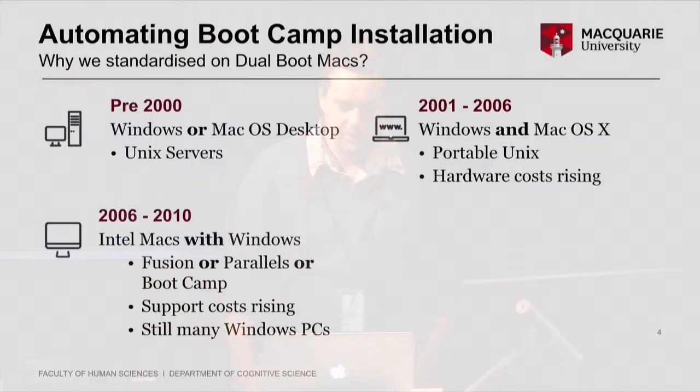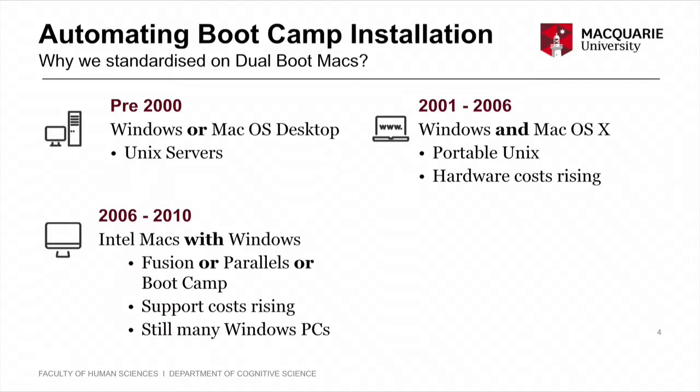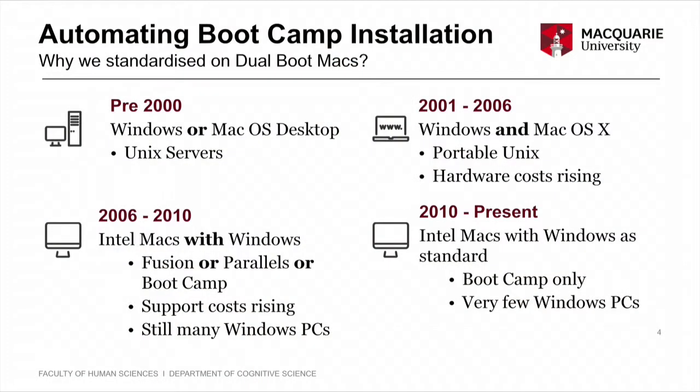People started to get everything they needed on one computer, but the way we were deploying Windows was really varied — some people ran Fusion, some ran Parallels, some Boot Camp. It was becoming a bit of a support nightmare, and we still had lots of Windows PCs around. So around 2010, we decided to give everyone Boot Camp and make that our only Windows deployment on the desktop.